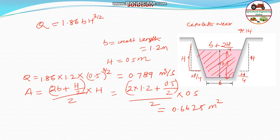Now, this is the area and discharge. If you know the area and we know the discharge, then you can easily calculate the velocity. Velocity will be equal to Q by A, that will be equal to 0.789 divided by 0.6625. The answer will be equal to 1.19 meter per second.